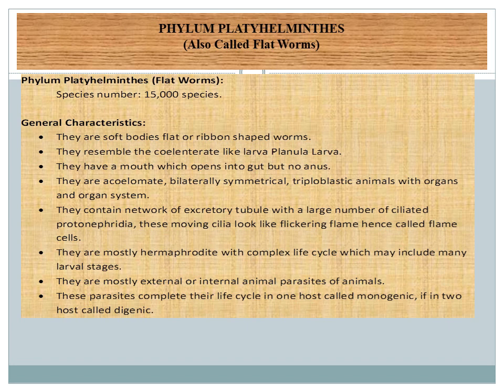They contain a network of excretory tubules with a large number of ciliated protonephridia. Protonephridia means 'first kidneys' — 'pro' means first, 'nephridia' is concerned with kidneys or excretion. These moving cilia look like a flickering flame, hence they are called flame cells. They are mostly hermaphrodite, meaning those animals which have both sexes in one individual.